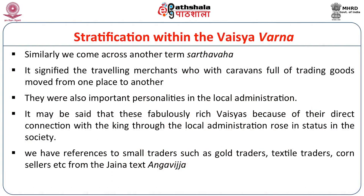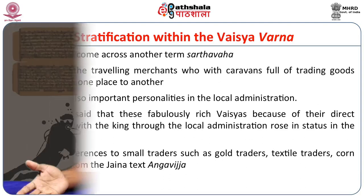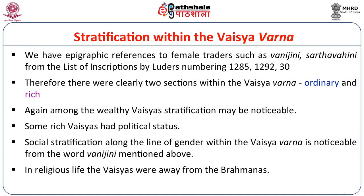There are references to small traders such as gold traders, textile traders, cotton and corn dealers. In terms of trade, we find layers of stratification — not all Vaishyas became big traders or big merchants; there were small traders also. In religious life also, Vaishyas were kept away from the Brahmanas. This is how stratification was maintained within the Vaishya varna.